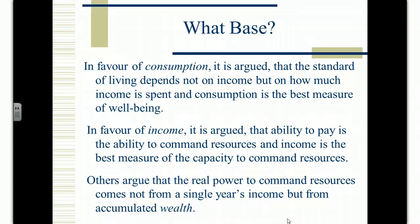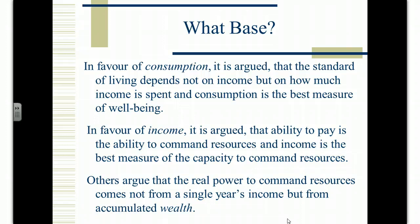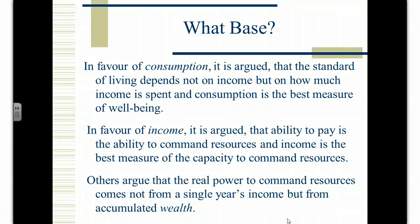In favour of income taxation, it's argued that ability to command resources comes from income, but others argue the real power to command resources comes not from a single year's income but from accumulated wealth. Some people could have substantial wealth holdings but in any given year have very little actual flow of income — owning assets like residential property, pension funds, or businesses that generate cash flow. There could be substantial wealth without significant income. A person with significant wealth can buy lots of goods and services by transforming their wealth. If you don't tax wealth, you're not taxing their ability to pay.